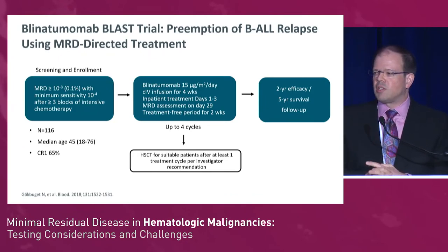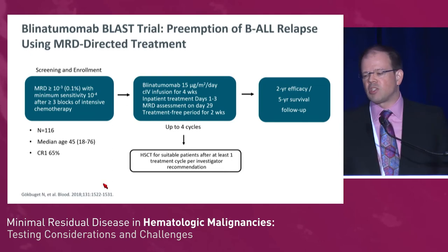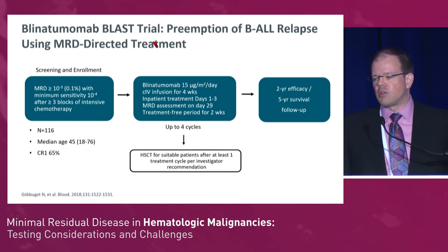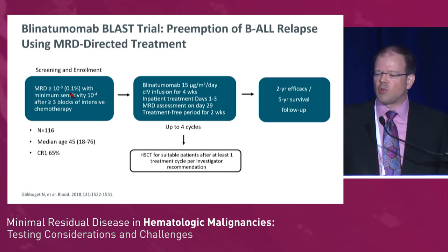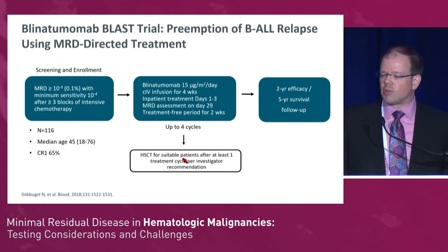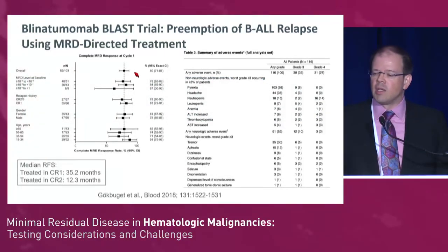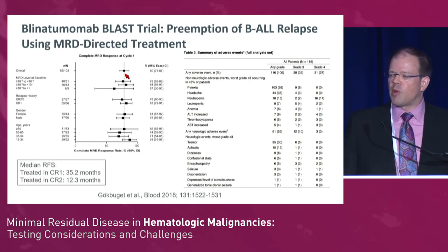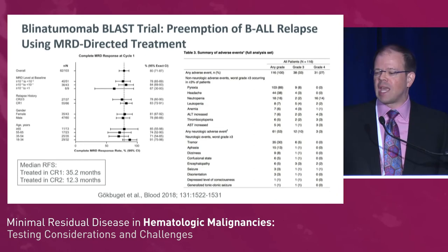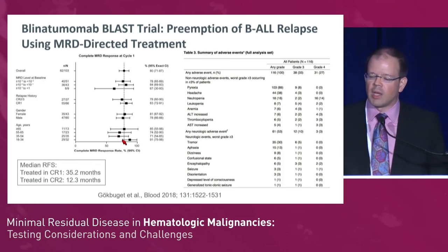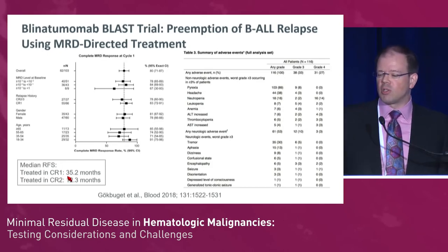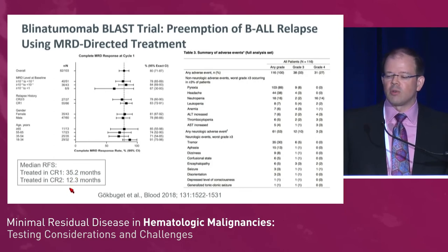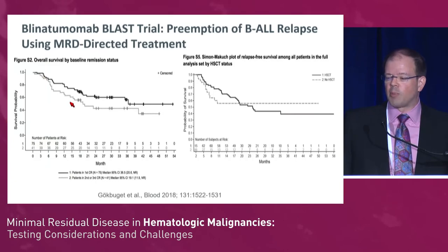In acute lymphoblastic leukemia, we have the unique situation of having a drug approved for patients with MRD — blinatumomab, the bispecific T-cell engager. The BLAST study conducted in patients with greater than 0.1% disease burden after three blocks of intensive chemotherapy showed that conversion from MRD-positive above 0.1% to MRD-negative below 0.01% was achieved in 80% of patients. This was useful across a wide range of MRD burdens and ages, and in first and second remission. It is more successful when employed in first remission, with a median progression-free survival of 35 months compared to about 12 months in second remission.